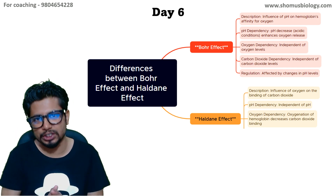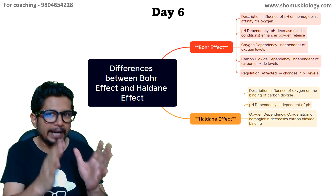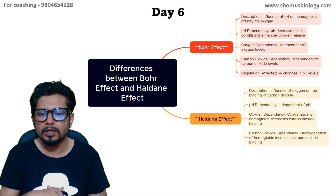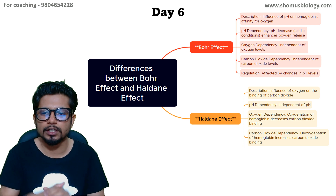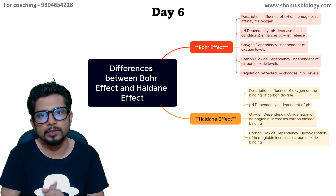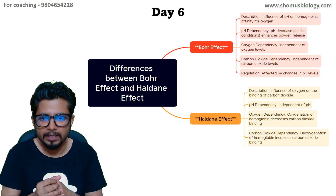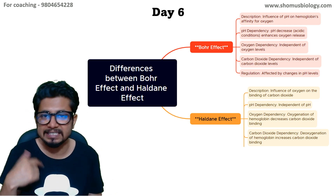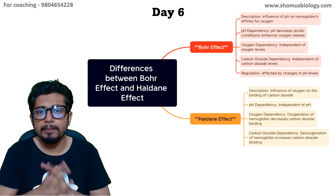So if there is a high concentration of CO2, hemoglobin will tend to bind to CO2, not oxygen. Regarding carbon dioxide dependency, deoxygenation of hemoglobin increases upon carbon dioxide binding. So whenever there is carbon dioxide binding, hemoglobin will lose all the oxygen that is associated with it. Why is this important?